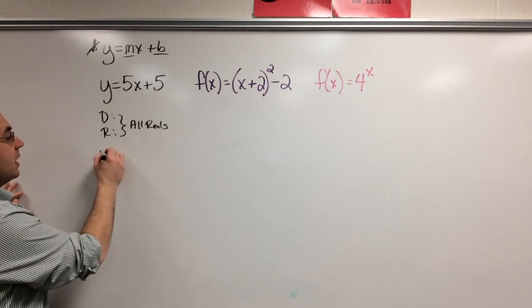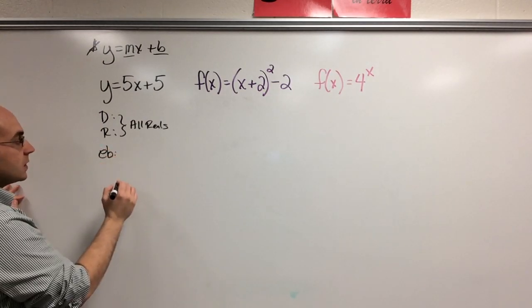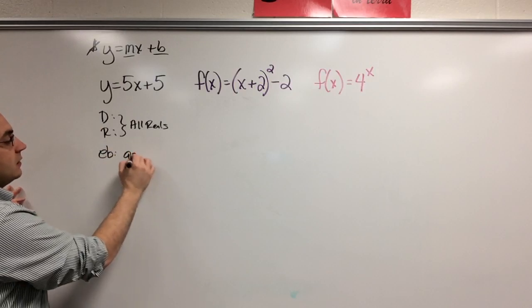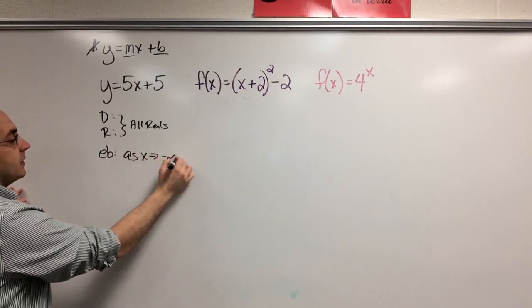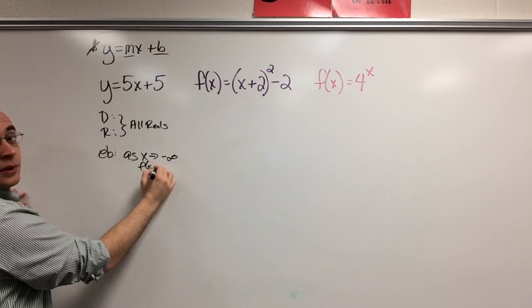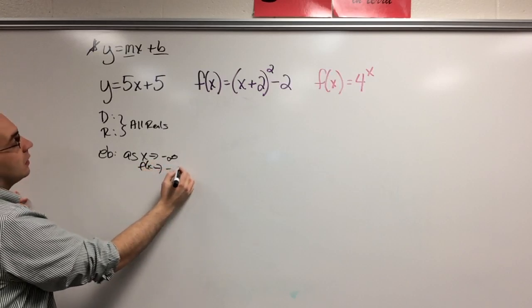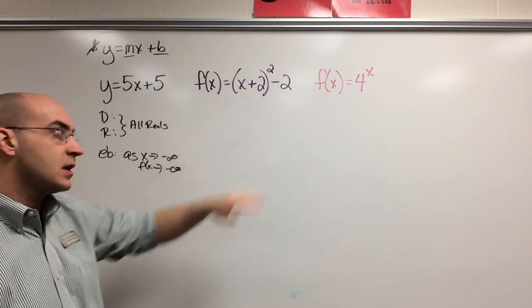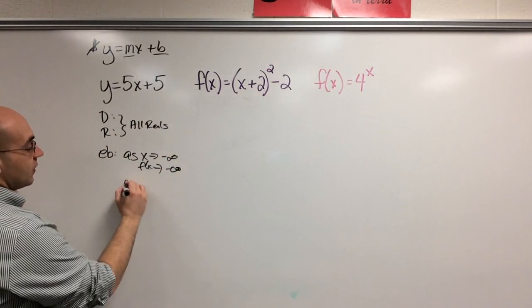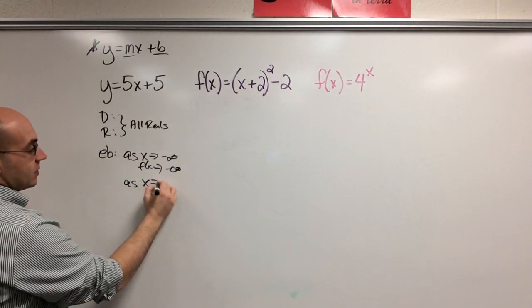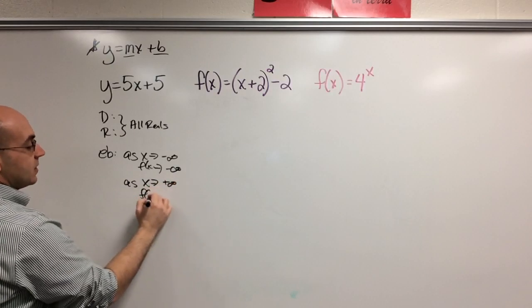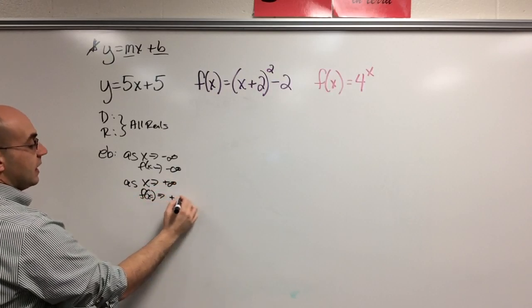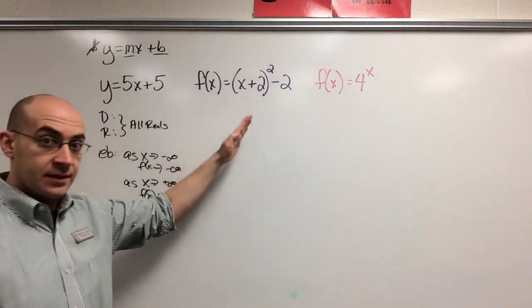So end behavior, they all have end behaviors. As x approaches negative infinity, f of x also approaches negative infinity, and that is because this line is going like this with a positive slope. So the other side is also true: as x approaches positive infinity, f of x also approaches positive infinity, because that line goes like this.